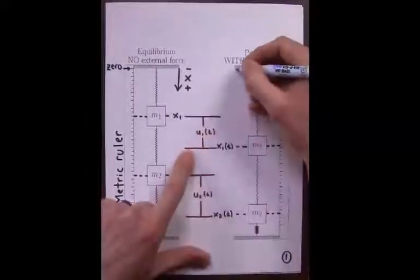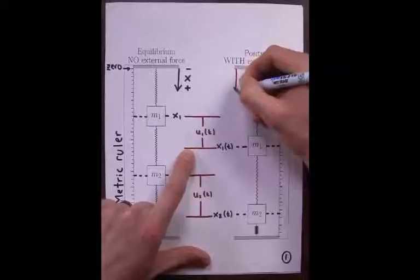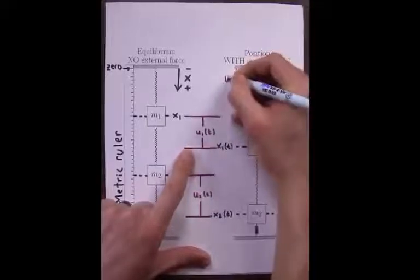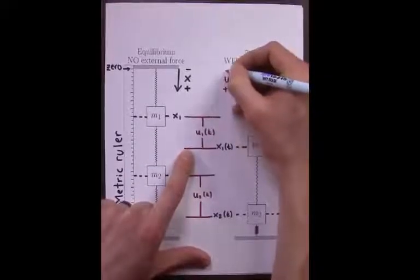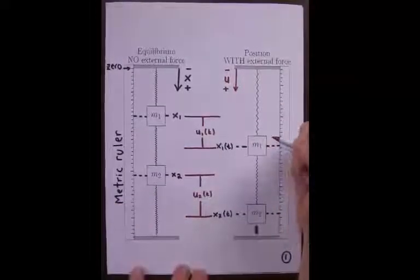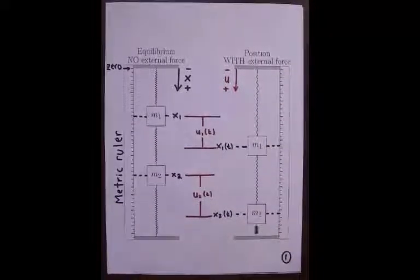Notice that the displacement functions are positive if and only if the position at time t is below equilibrium. Thus, the reference position points positive in the downward direction as seen here.